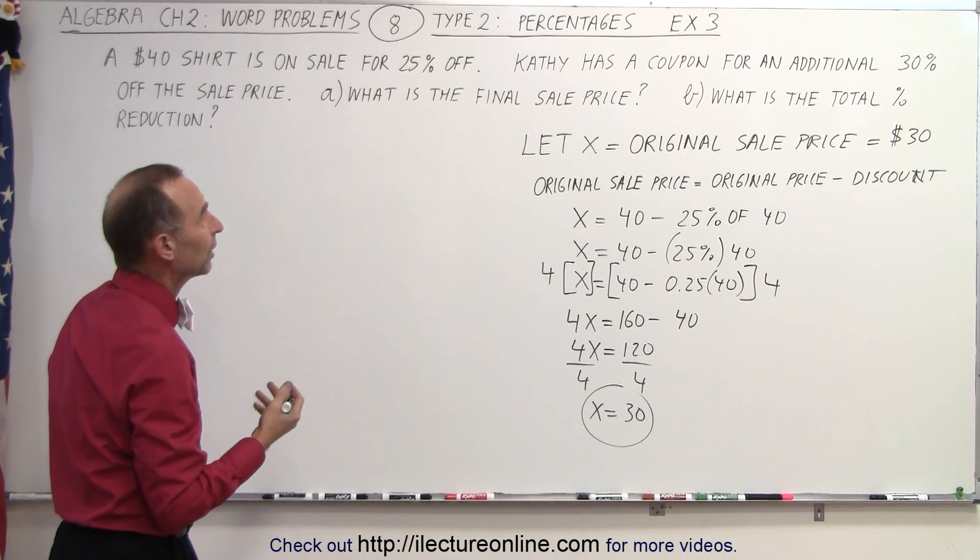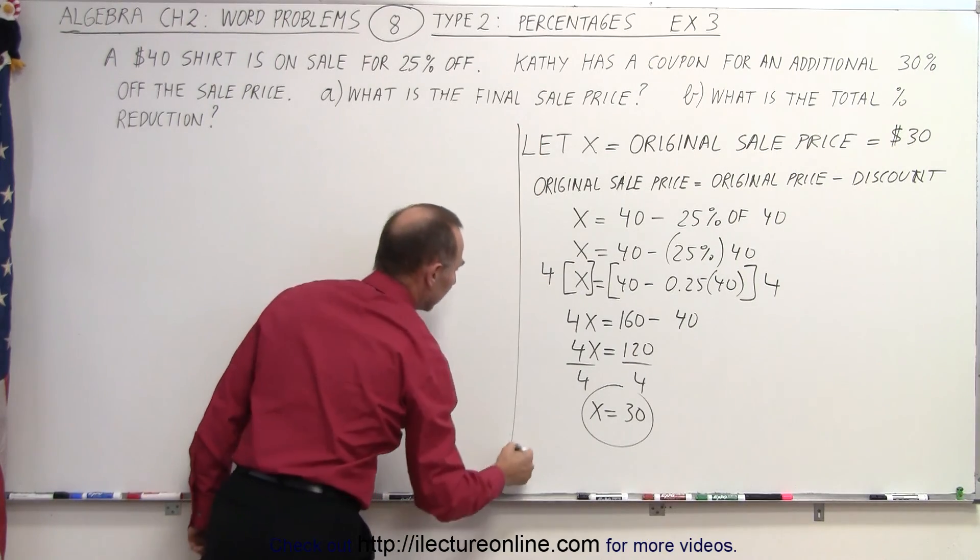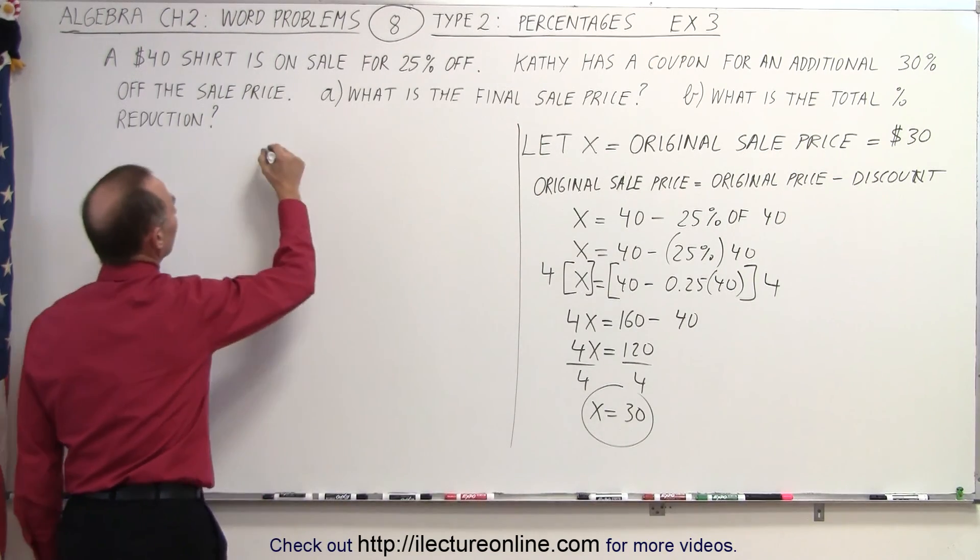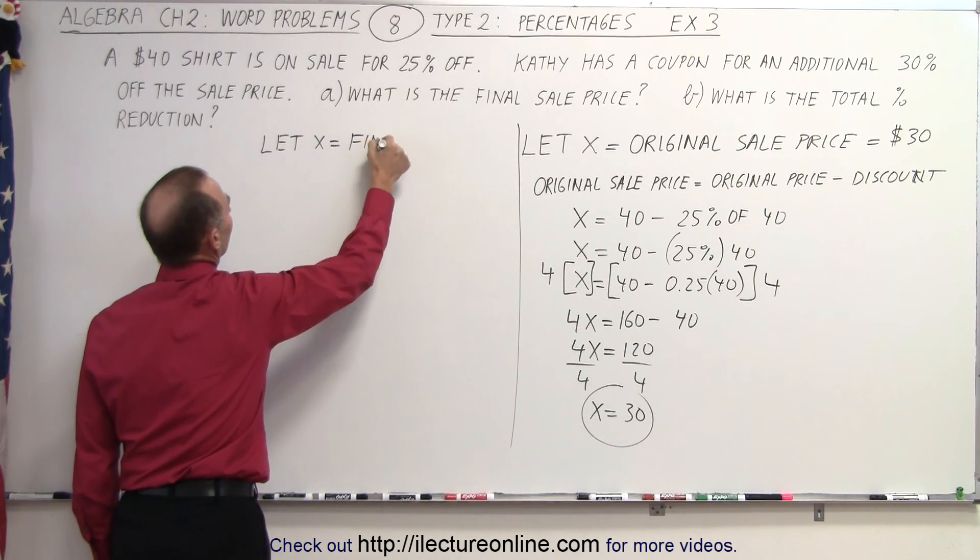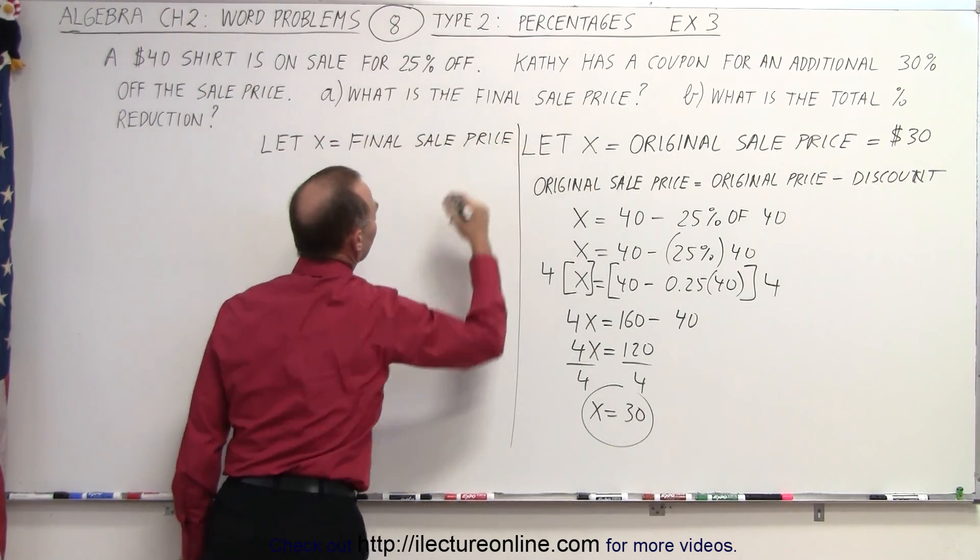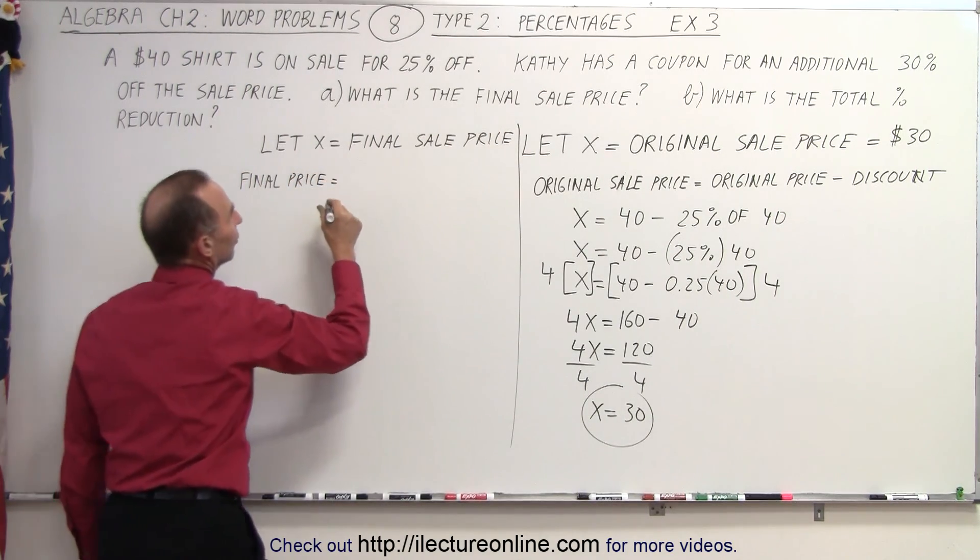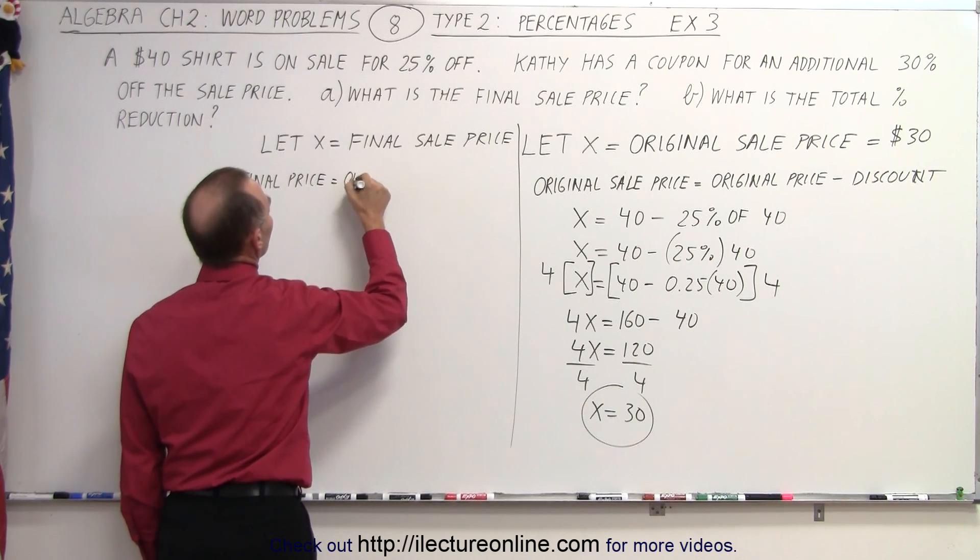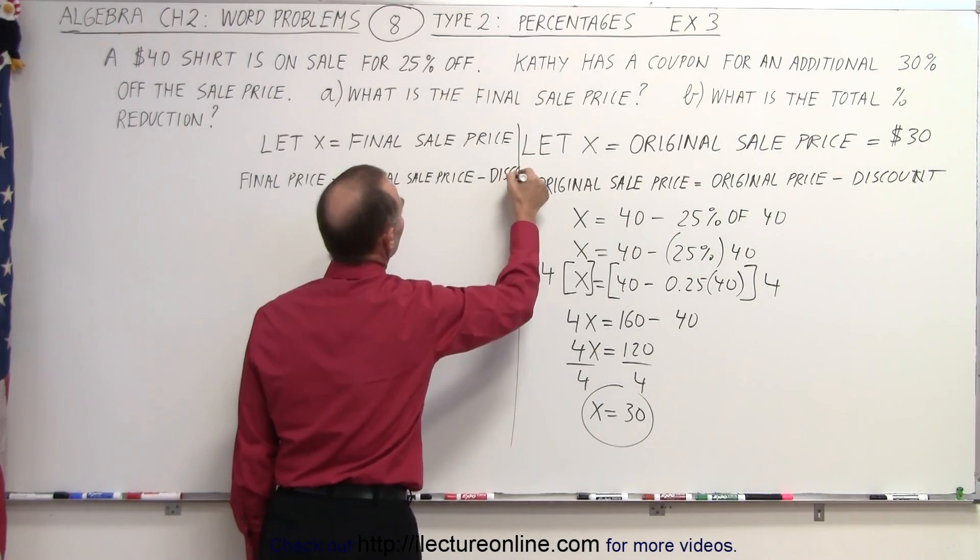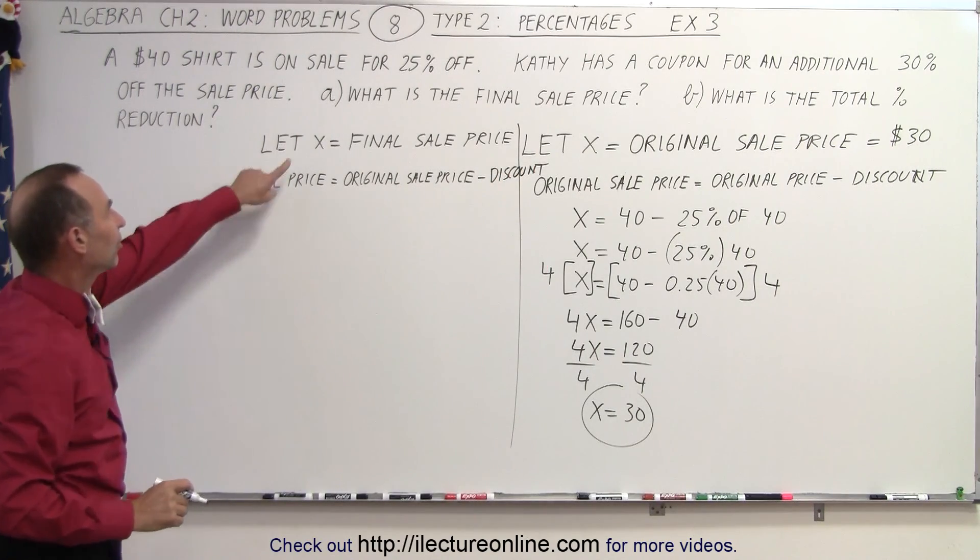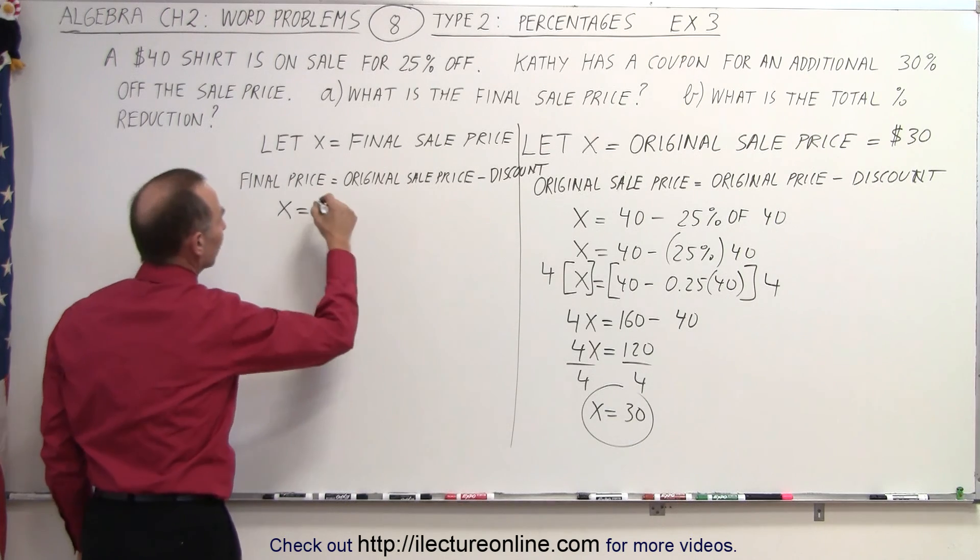So now what we can do is we can go ahead and we're going to solve the problem again. So this is now done. We're now going to say let x equal the final sale price. And now again we need an equation. So we can say that the final price is equal to the original sale price